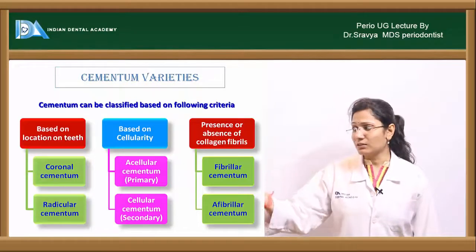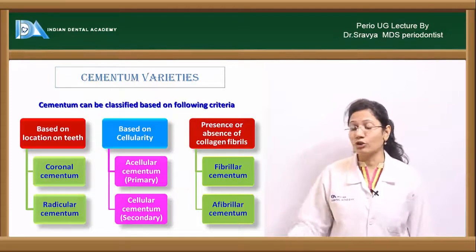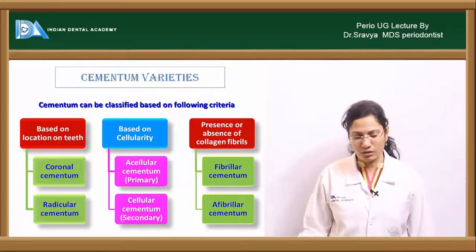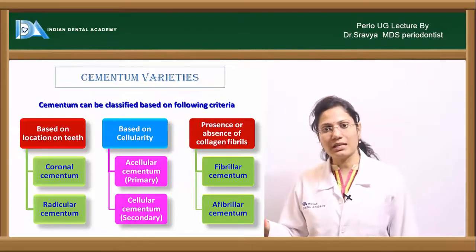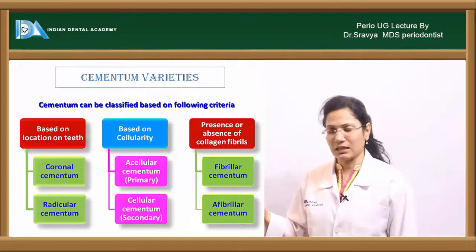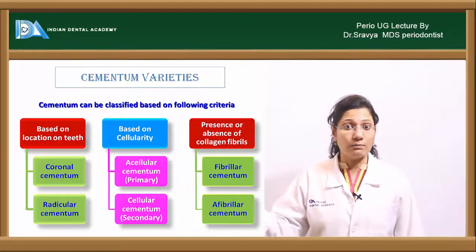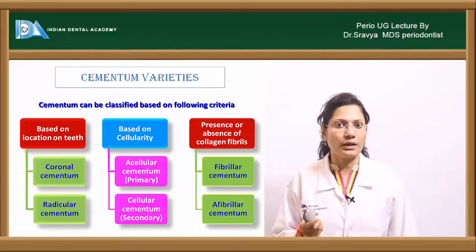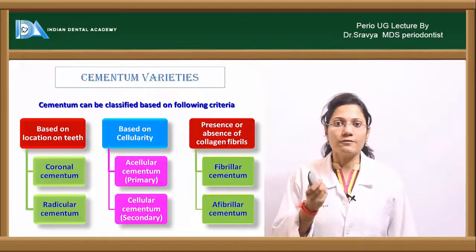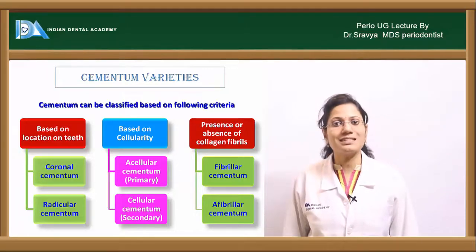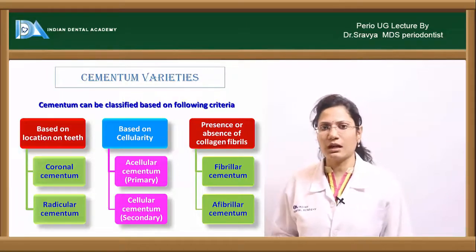Based on cellularity, cementum is acellular or cellular. Acellular cementum has no cells; cellular cementum has cells. Acellular cementum is also called primary cementum because it is the first-formed cementum, while cellular cementum is secondary cementum, forming later in life.